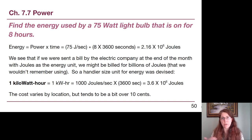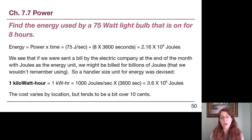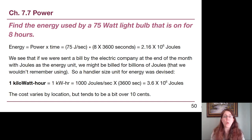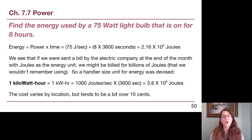A simple starter question: find the energy used by a 75-watt light bulb that is on for 8 hours. 75 watts is the power and 8 hours is the time. Starting with power equals energy over time, then multiplying both sides by time — that 8 hours must be in seconds, so multiply by 60 minutes per hour and 60 seconds per minute. Going through all of that, the energy for a single light bulb for a single day is over 2 million joules.